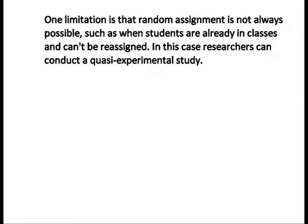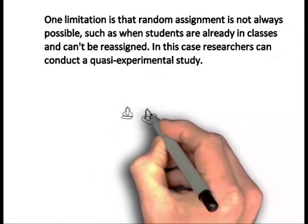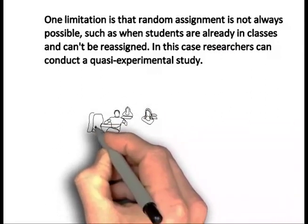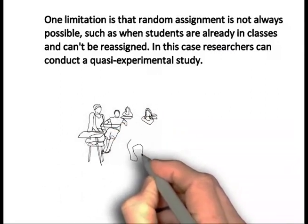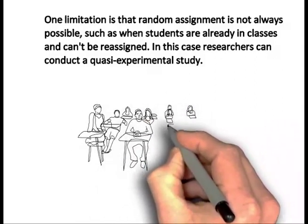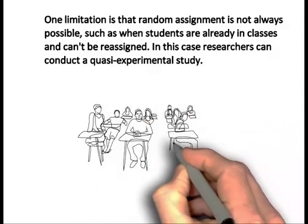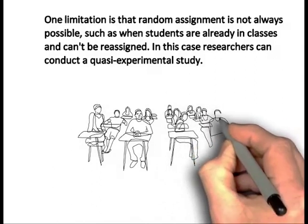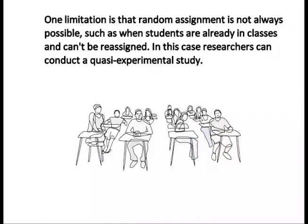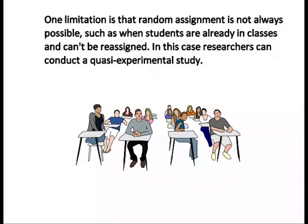A quasi-experimental study still features researchers' treatment and control groups. However, since the groups were not randomly assigned, researchers must control for variables that could be different between the two groups. One way to help control for this is through the use of baseline data to test for the similarity of the groups before the intervention was implemented.